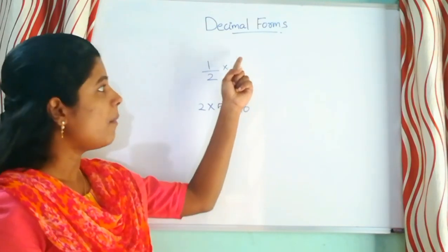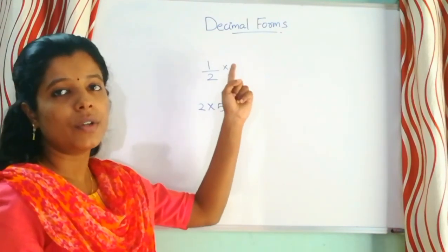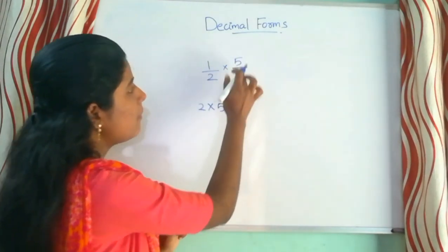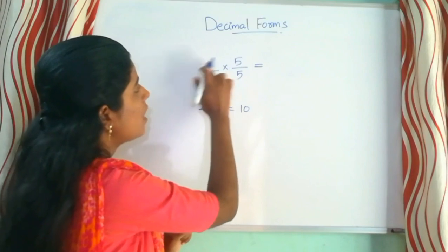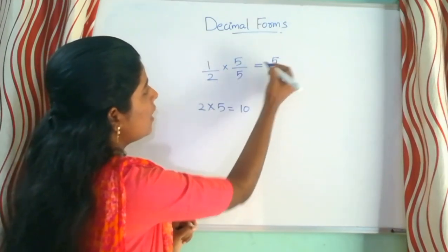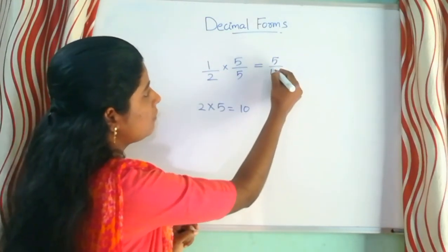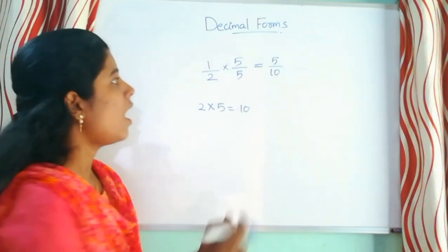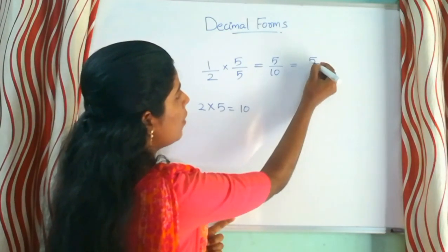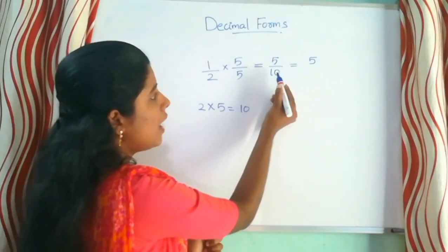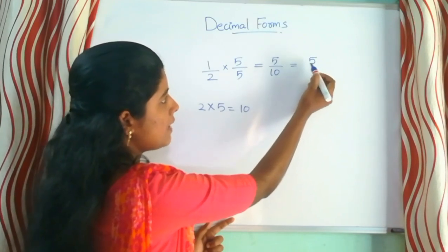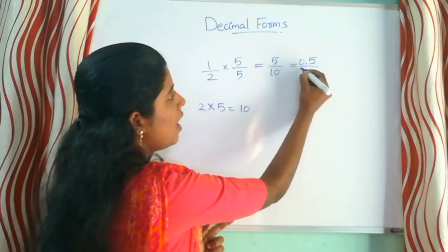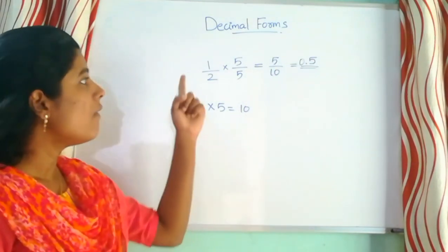Therefore we multiply now. Call this number 5. 5 divided by 5 — 5 is one more than 5. 1 into 5 is 5. That's why we add 2 into 5 is 10. We have to add 10 to the denominator here. That's why the numerator is 5. That's why we place the point — the point is 1 place. This is 0.5 and 1 by 2.